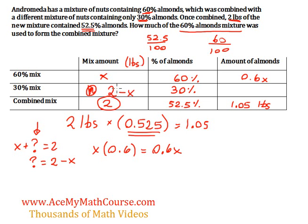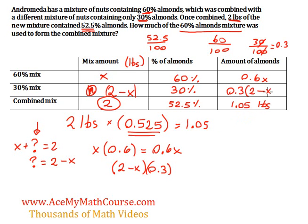If I multiply 2 minus x by 30%, I get (2 minus x) times 0.3, because 30 divided by 100 is 0.3. So that's the amount of almonds in the 30% mix row — I'll leave it as 0.3 times (2 minus x). Now, we know that 0.6x plus 0.3(2 minus x) equals 1.05, because adding the almonds from both mixes must give the total almonds in the combined mix.